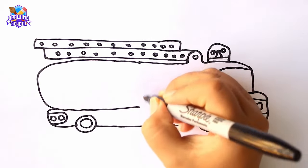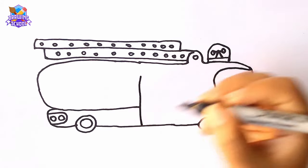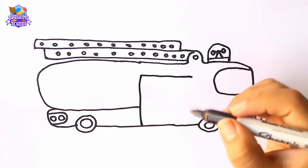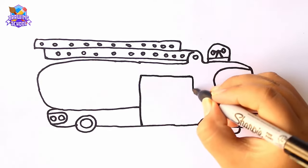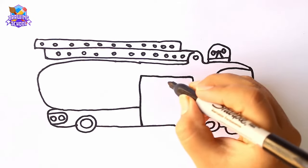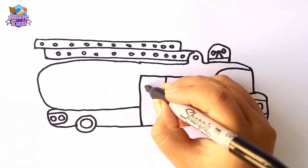And we're missing something very important. This kind of trucks have a place where they keep all the tools they may need on the side. So we draw a square like this. We divide it into two and we draw a frame like this.